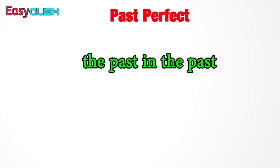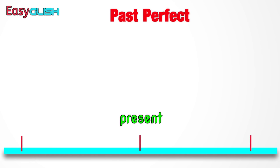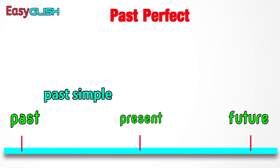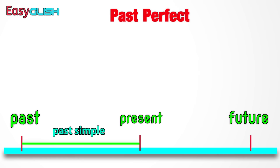الماضي ديال الماضي. Here is the present, here is the future, and here is the past. Past simple talks about an action in the past — الماضي كيهدر على شي حاجة وقعت في الماضي بكل بساطة. Past perfect كان في هاد البلاصة، يعني شي حاجة وقعت قبل من شي حاجة في البلاصة التانية — that's why I said 'the past in the past.'